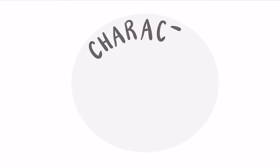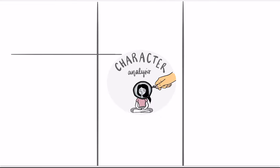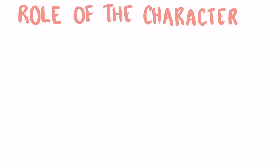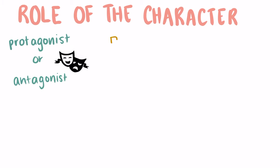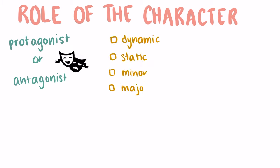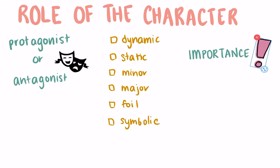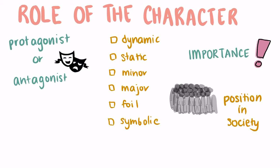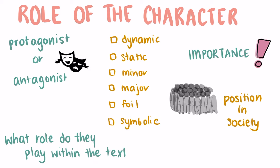Today we'll be going through a couple of ways that you can analyze a character in order to complete a full character analysis. The first thing you should look at is the role of the character. Are they a protagonist or an antagonist? Are they dynamic, static, minor, major, a foil, or perhaps a character for symbolic means? What is the importance of that character as well as what is their position in society? By doing these you can figure out the role that they play within the text.